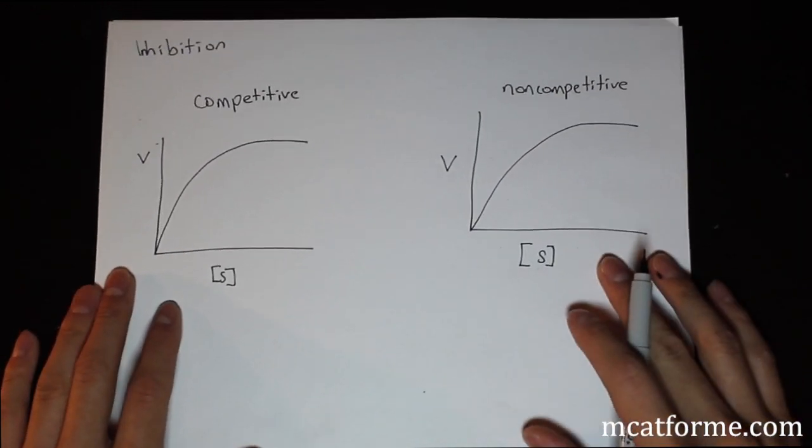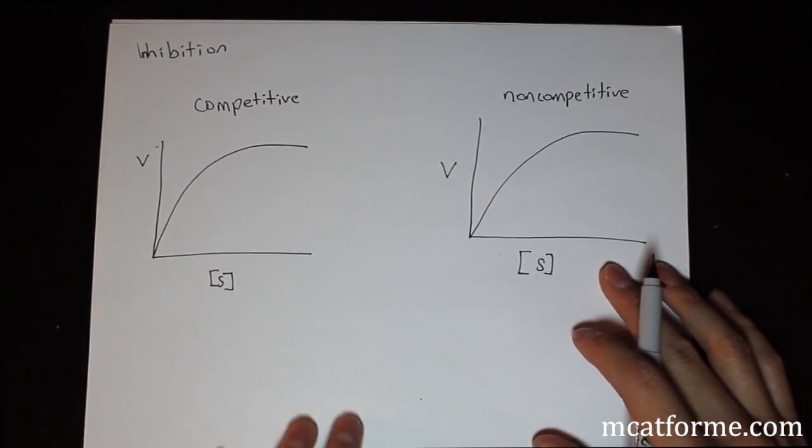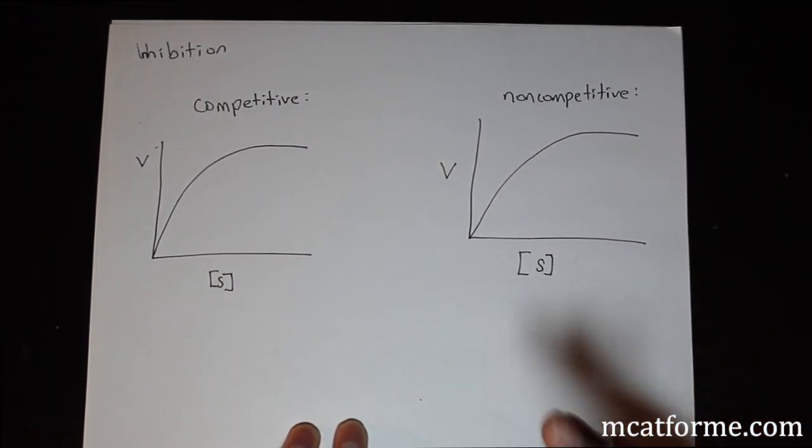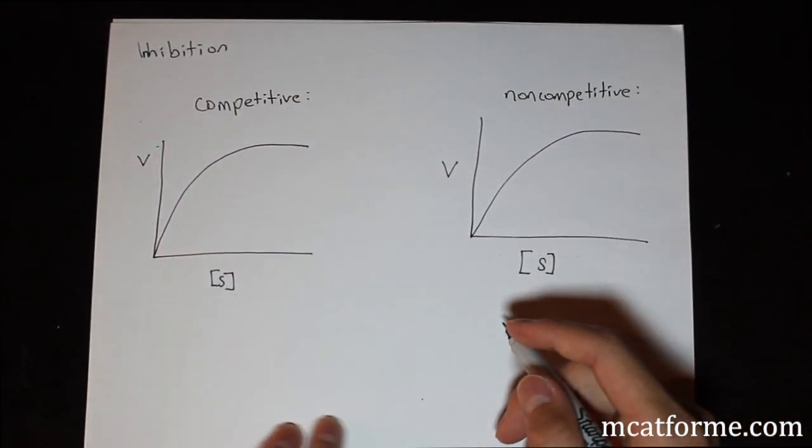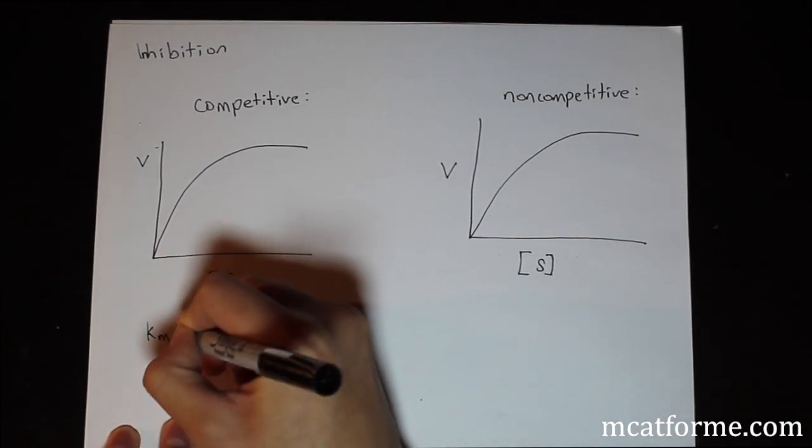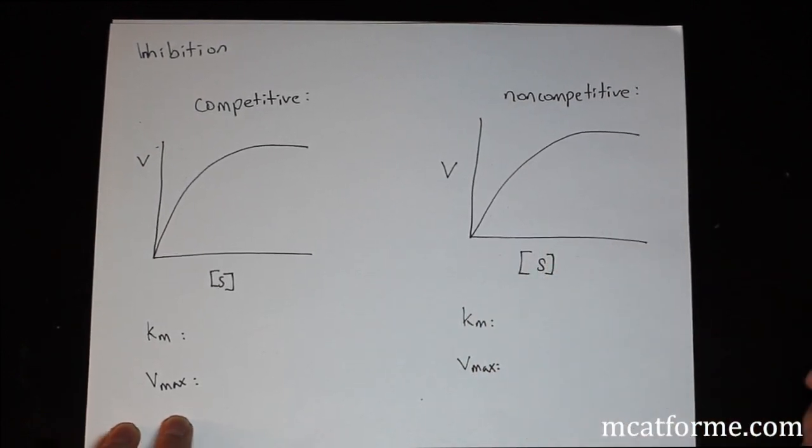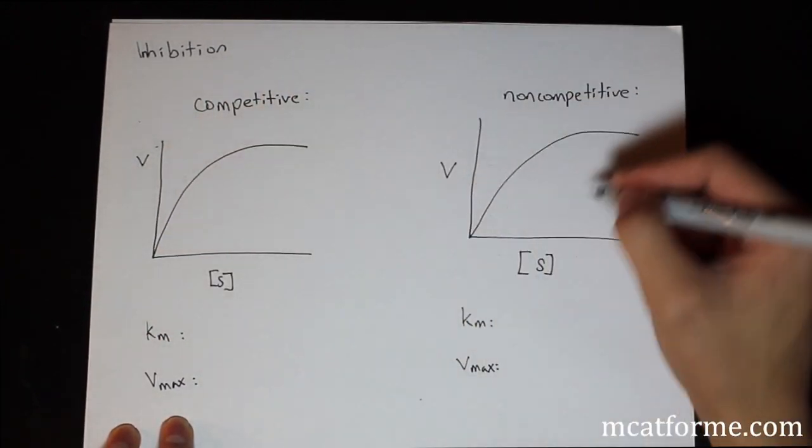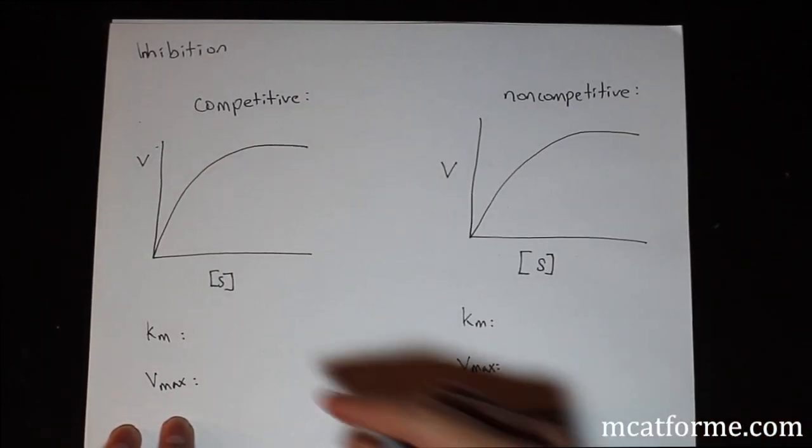So the final thing we're going to talk about is inhibition of enzymes. There's two types: competitive and non-competitive. There is a third one as well, but we don't need to worry about that. All we need to know is there's competitive and non-competitive, and we need to compare their KMs and their Vmax. That's all that changes between the two, and this is something you have to memorize. Let's just imagine this is the graph of the enzyme normally, the normal activity of the enzyme, normal curve like that.